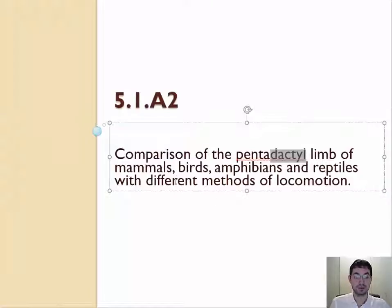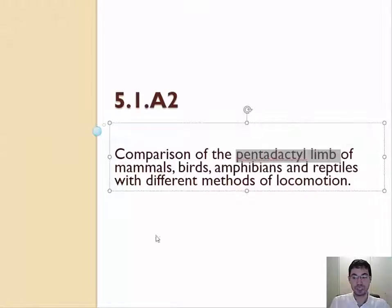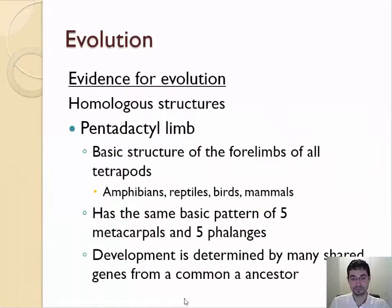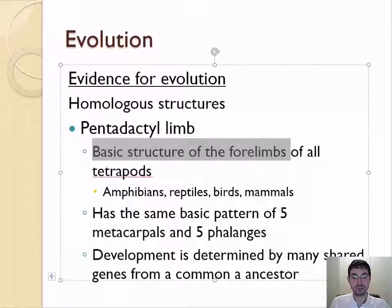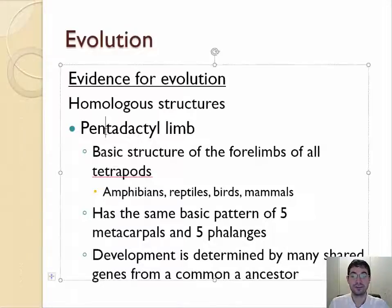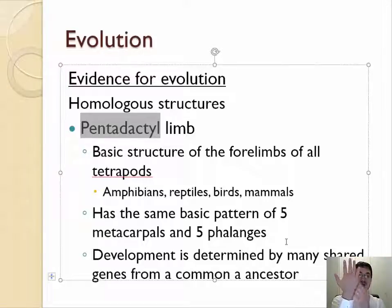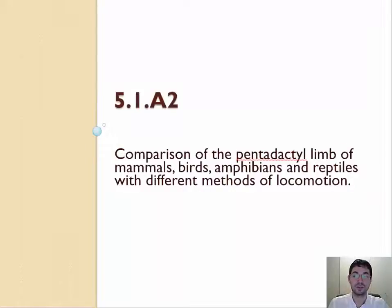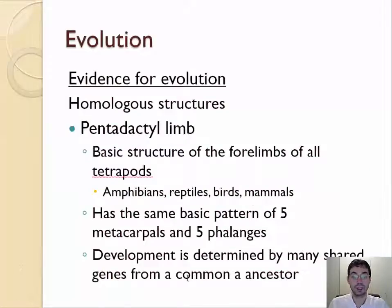Mammals, birds, amphibians, and reptiles all use different methods of locomotion or movement, yet they all have variations of the pentadactyl limb. The pentadactyl limb is the basic structure for the limbs of all tetrapods — all living things with two arms and two legs, or two wings and two legs, or four legs — having a variation of the pentadactyl limb with the same basic pattern of five metacarpals and five phalanges. The reason that all of these living things — all mammals, birds, amphibians, and reptiles — have a variation of the pentadactyl limb is because we share a common ancestor.